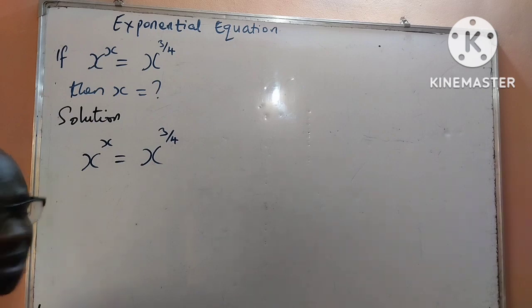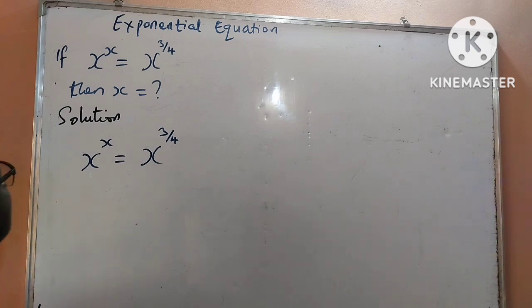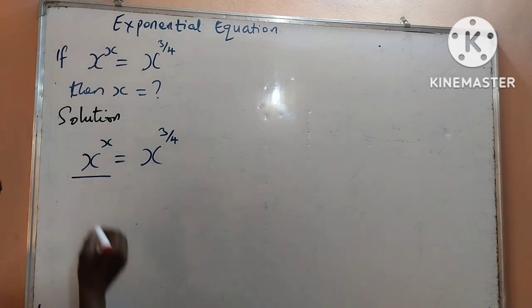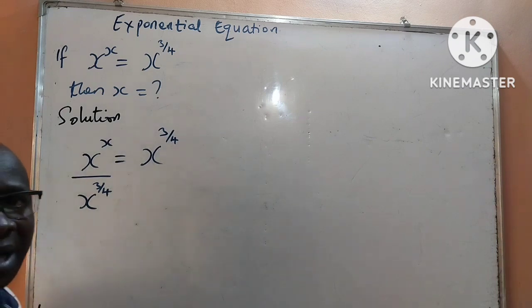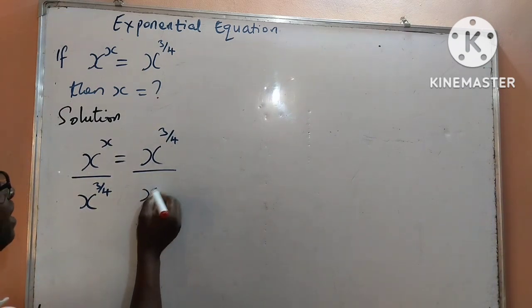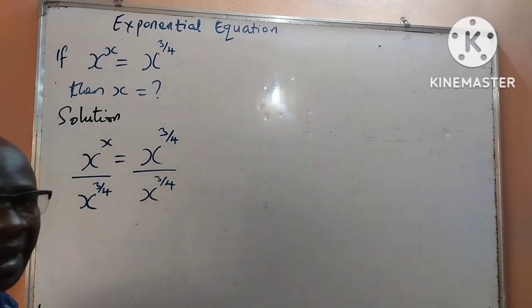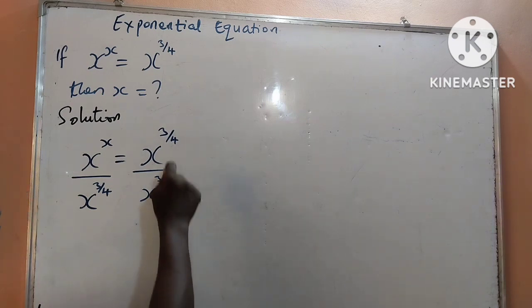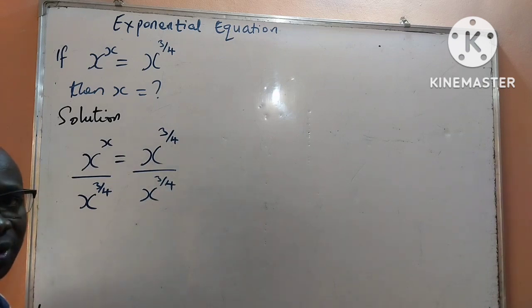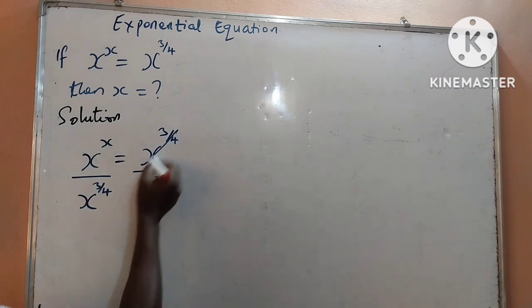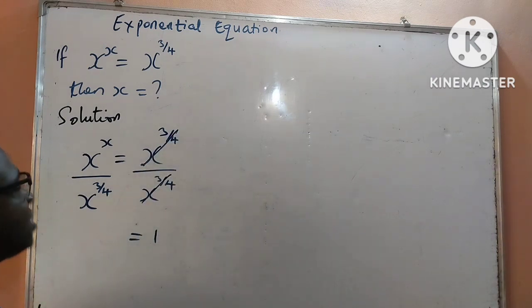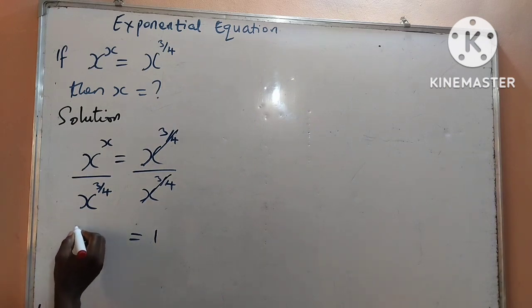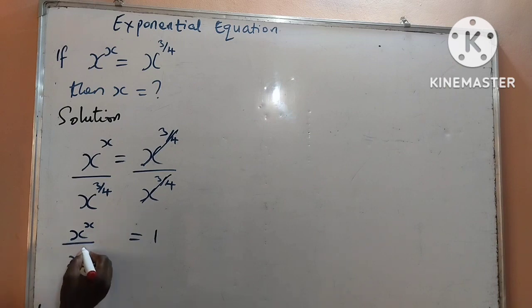The first step that I will take here is to divide both sides by x to the power of 3 over 4. I shall divide this side by x to the power of 3 over 4 and also divide the right hand side by x to the power of 3 over 4. My idea is to isolate x to one side. You can see that what I have by the numerator is what I have at the denominator, meaning both cancel out to give me 1 on the right hand side. And on the left, I shall now have x to the power of x all over x to the power of 3 over 4.